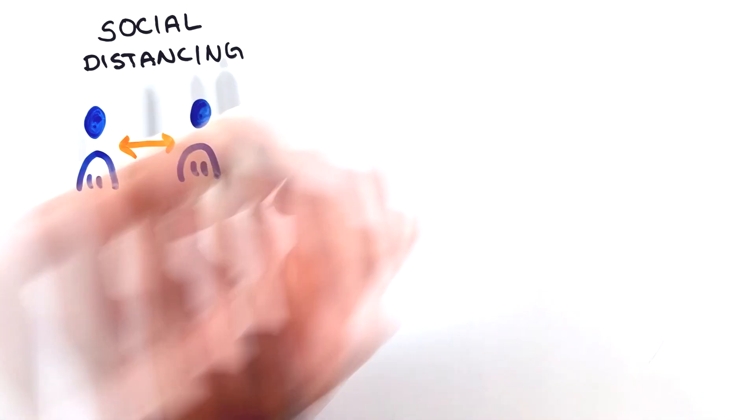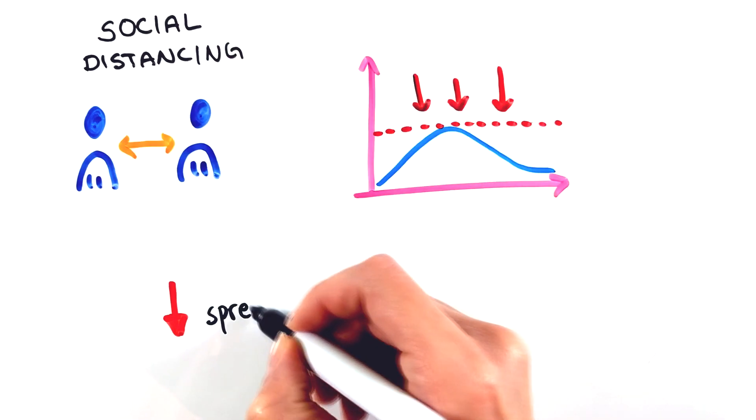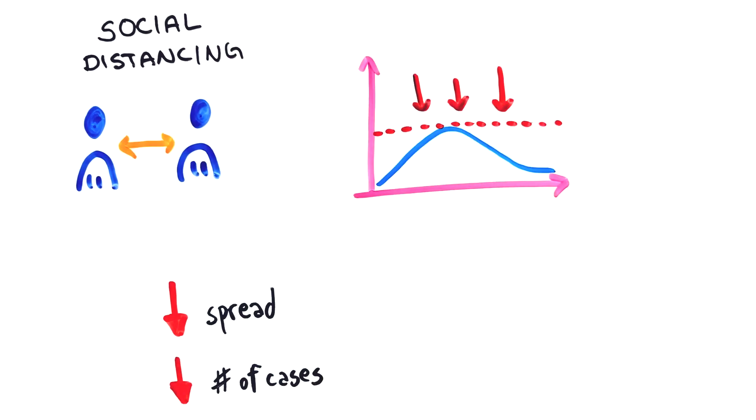Social distancing measures flatten out the epidemic curve, stop the disease from spreading to the rest of the population, and reduce the overall number of cases.